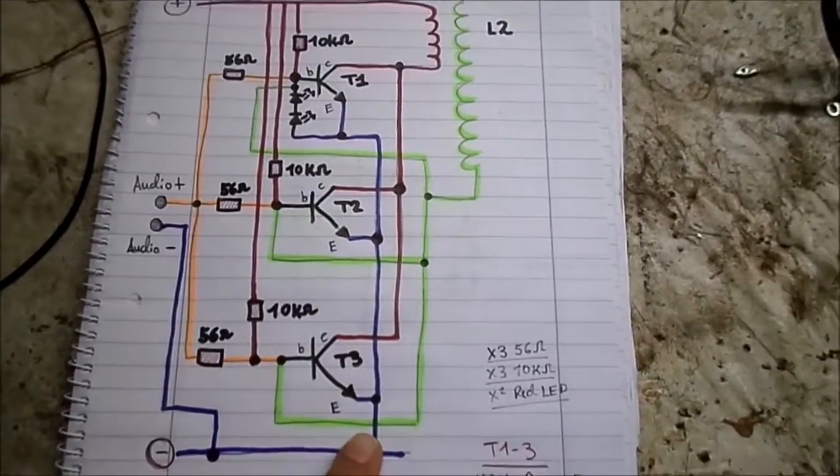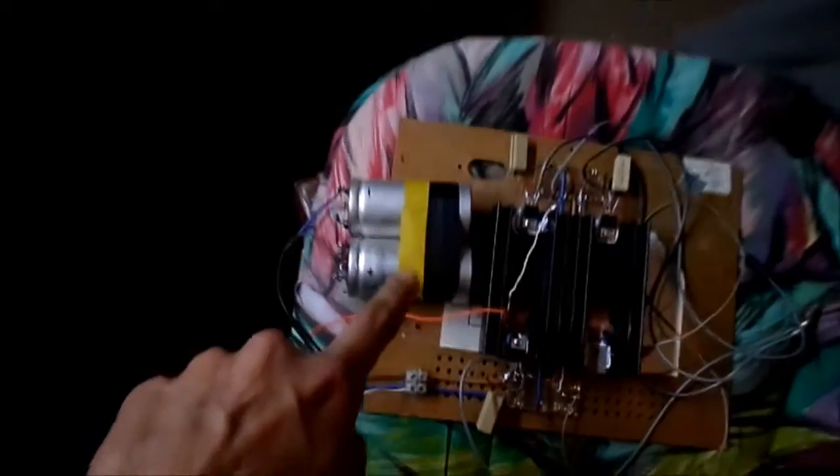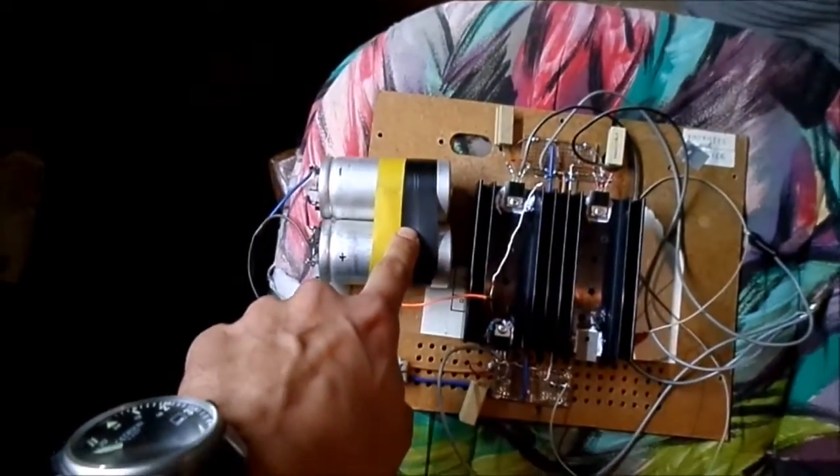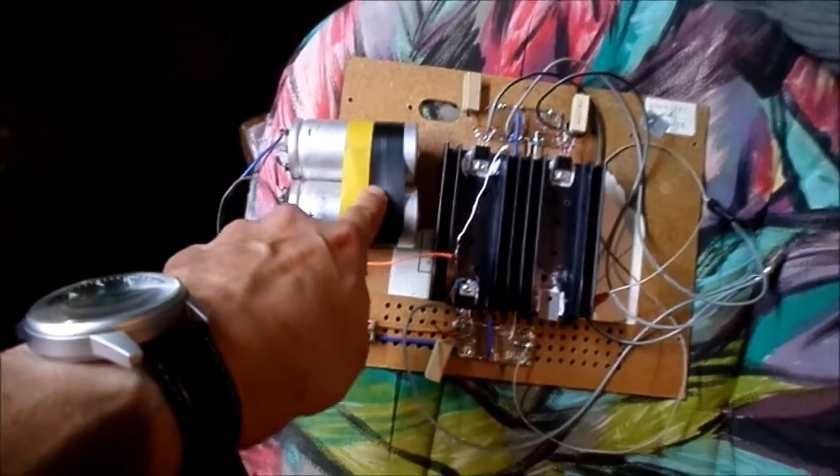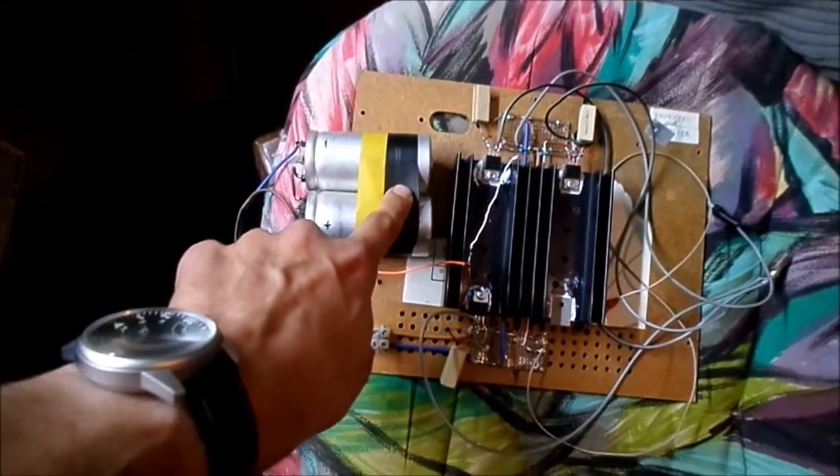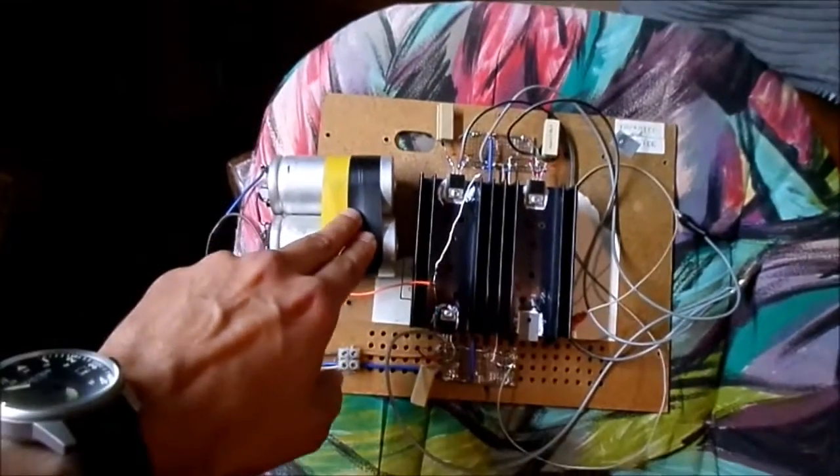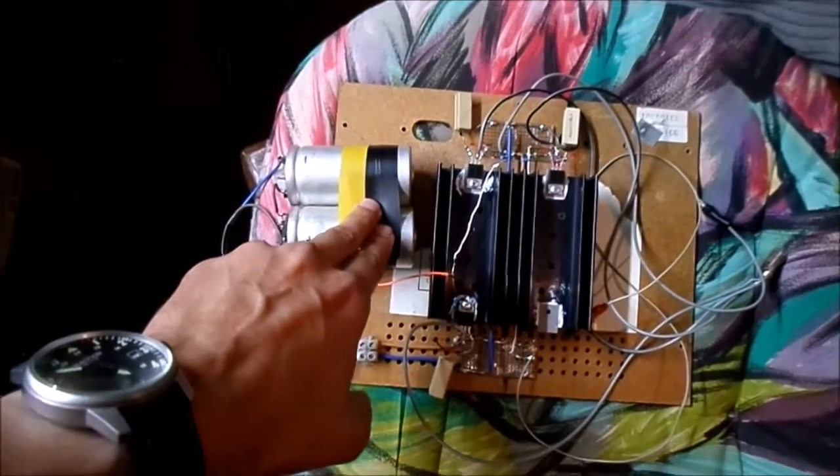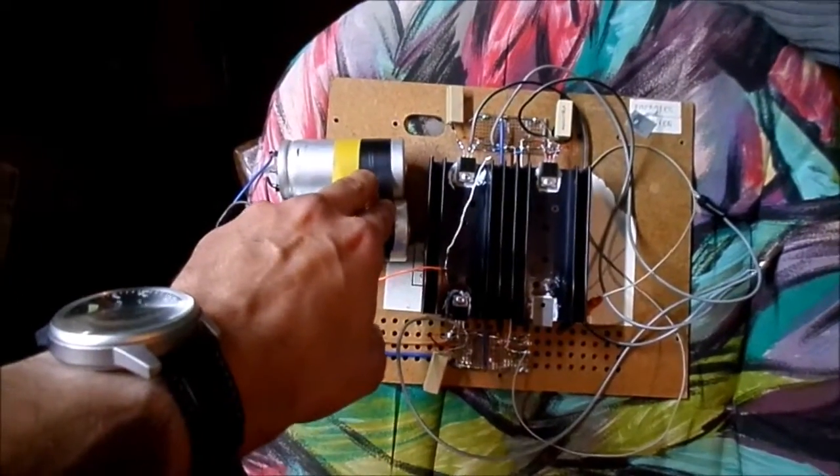I also used about 11,000 microfarads worth of filtering to try to get rid of any of that nasty hum from my variac. But it's almost impossible to get rid of all that hum. So maybe some type of switch mode power supply, something to where you don't really hear that 50 or 50 hertz hum, or if you're in the states, 60 hertz hum.